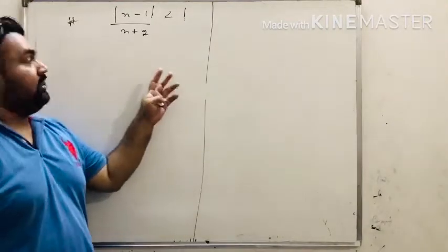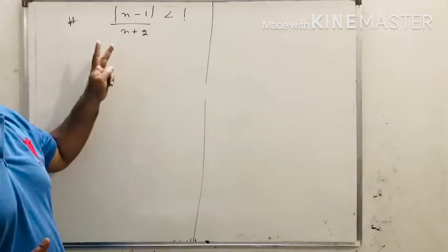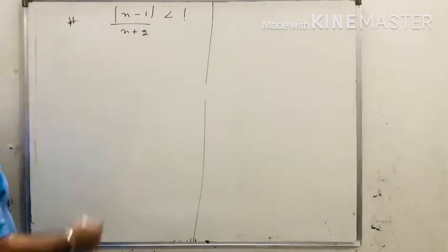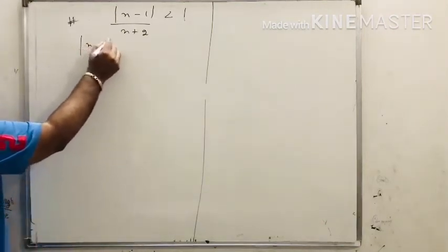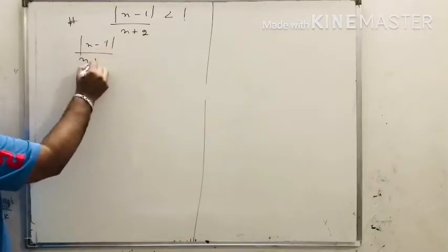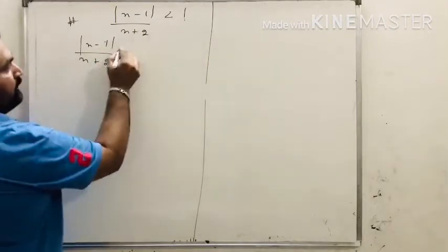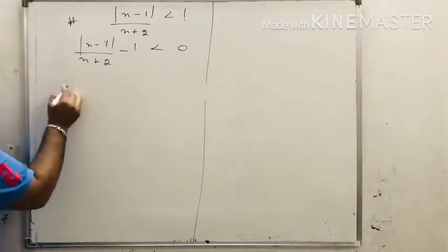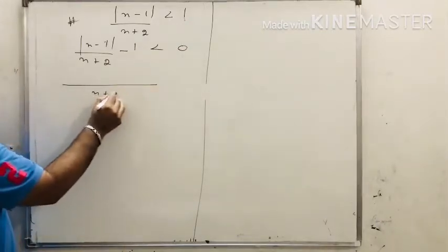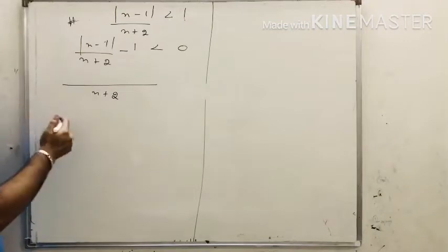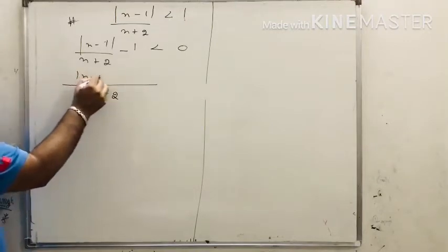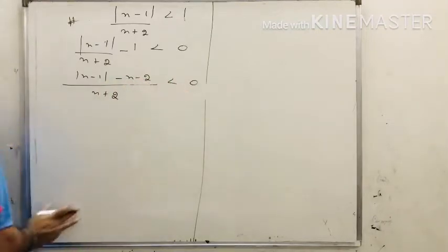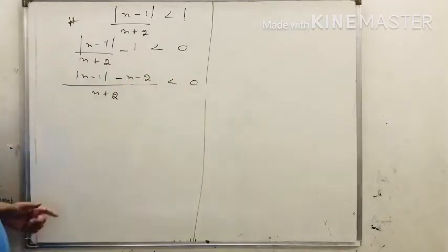The next question is very similar to the previous one. First we shift the number to the left side: minus 1 less than or equals to 0. Then we take the common denominator. This becomes modulus x minus 1 minus x minus 2 upon x plus 2 less than or equals to 0.